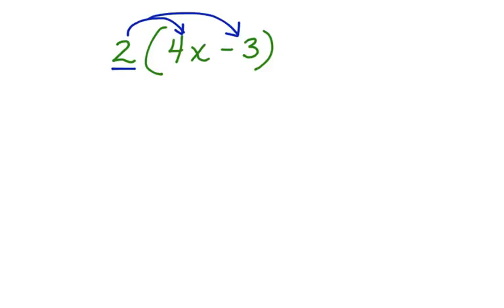In this case, we would multiply 2 times 4x and we would get 8x, and we would multiply 2 times negative 3, which would give us negative 6. And now this expression is simplified.